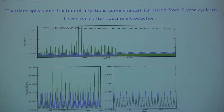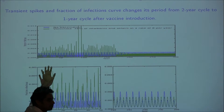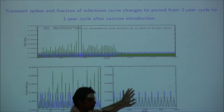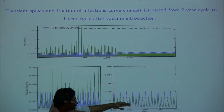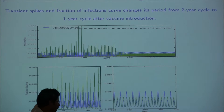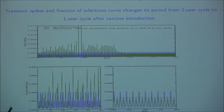I start by introducing some vaccine. In this case, I vaccinated 78% of newborns, and we do not vaccinate others at all. For about 160 to 170 years, we have transient spikes — green spikes after vaccine introduction where the incidence is higher than in the pre-vaccine period. But after the vaccination curve settles down, the fraction of infection curve settles down to a period-one solution, and we no longer have any transient spikes exceeding the pre-vaccine maximum amplitude.